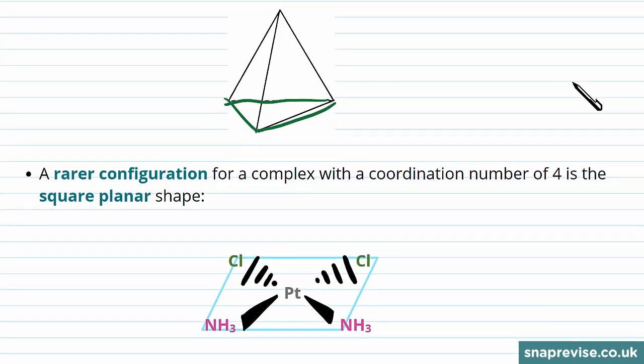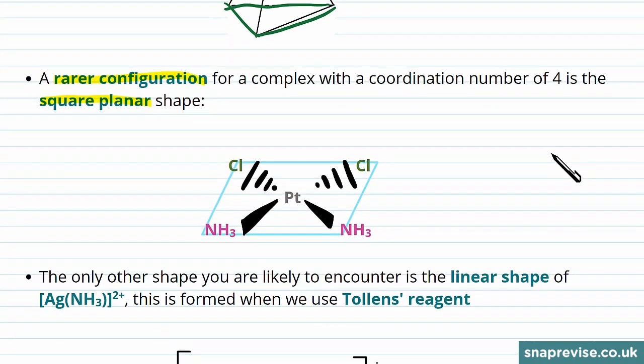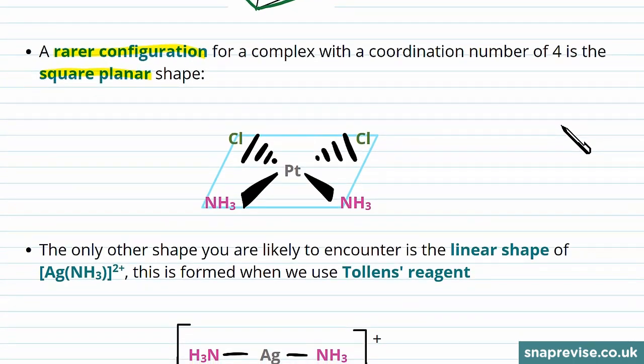A rarer configuration for when we have four coordinate bonds is a square planar shape. This is where two of the bonds are shown going into the screen and two of the bonds are shown coming out with wedges, which forms a flat plane, again shown here by a blue square.